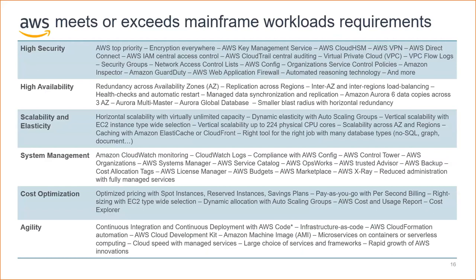Looking at security, for example — cloud security is AWS's highest priority. We've built strong safeguards to help protect customer privacy. AWS is architected to be the most flexible and secure cloud computing environment. Our core infrastructure is built to satisfy the security requirements for the military, global banks, and other high-sensitivity organizations. That security is supported by 230 AWS security services and features, covering encryption, confidentiality, identity and access management, key management, auditing, and more.